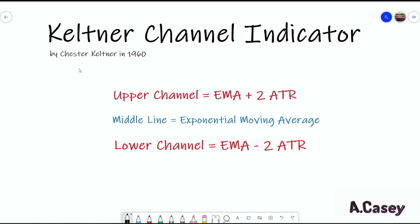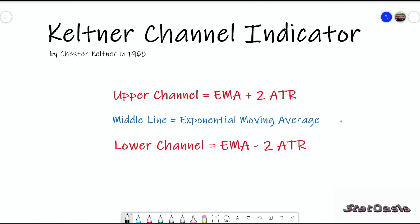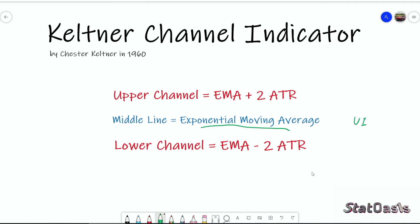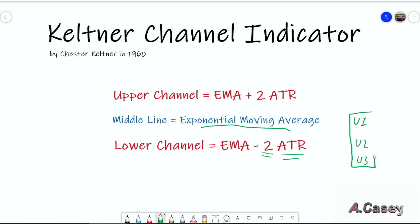Back in the 1960s when Chester Keltner invented the indicator, he used a simple moving average for the middle line and only the bar range instead of the average true range. This is the updated formula, which came about in the 1980s, and most trading platforms will have this formula. The indicator has three variables: the look-back period for the moving average, the multiplier, and the look-back period for the average true range — making it extremely versatile.